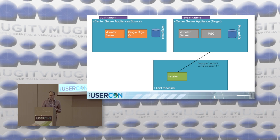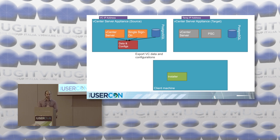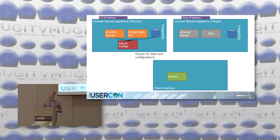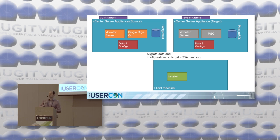As part of the migration process, we start the exporting phase. During export, we export all data from the database and services and put them locally on the source vCenter Server appliance — or Windows box. Then we copy it over to the target vCSA over SSH. So if you have a firewall, you must allow traffic on port 22.